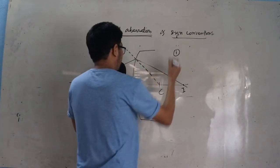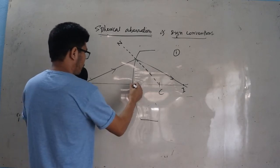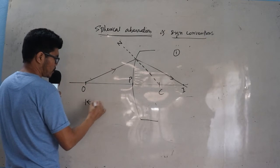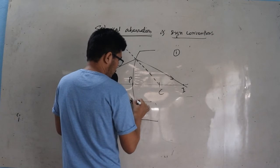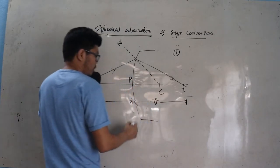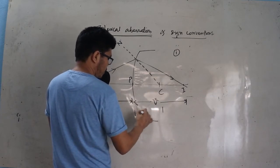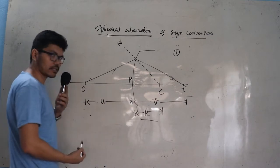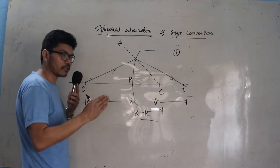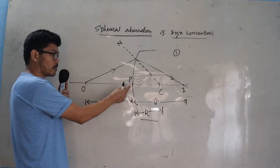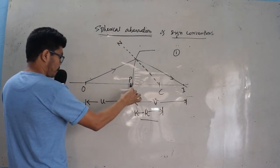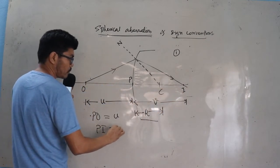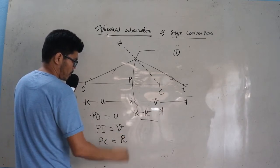The first sign convention rule says that all measurements should be done from the pole P, where P stands for pole of the surface. If object distance is taken as u, image distance is taken as v, and C is the center of curvature, then the distance between the center of curvature and the pole is the radius of curvature r. So: PO equals u, PI equals v, and PC equals r.